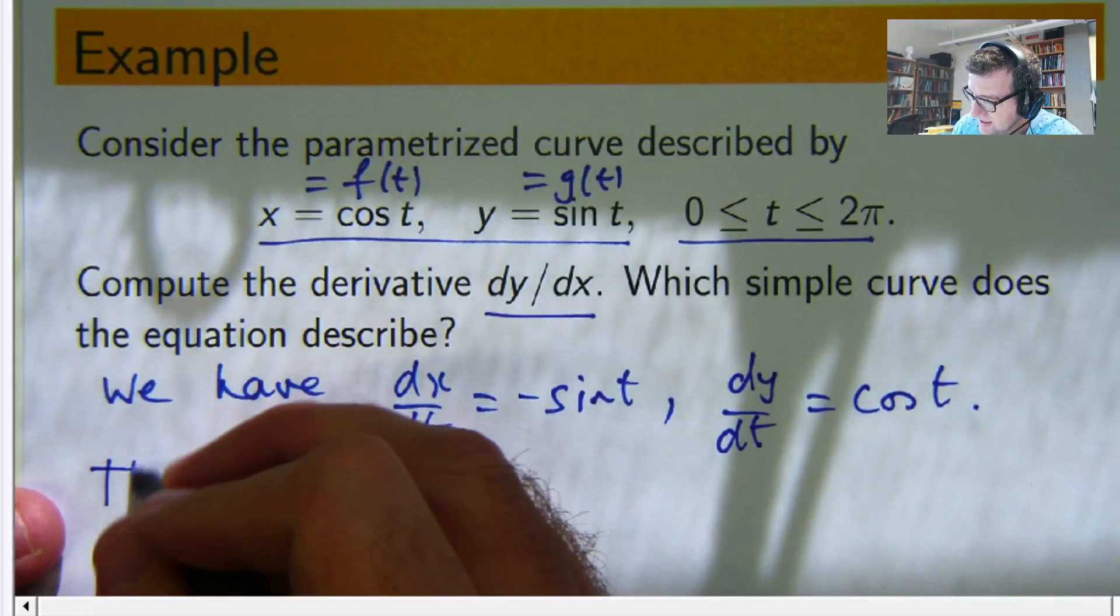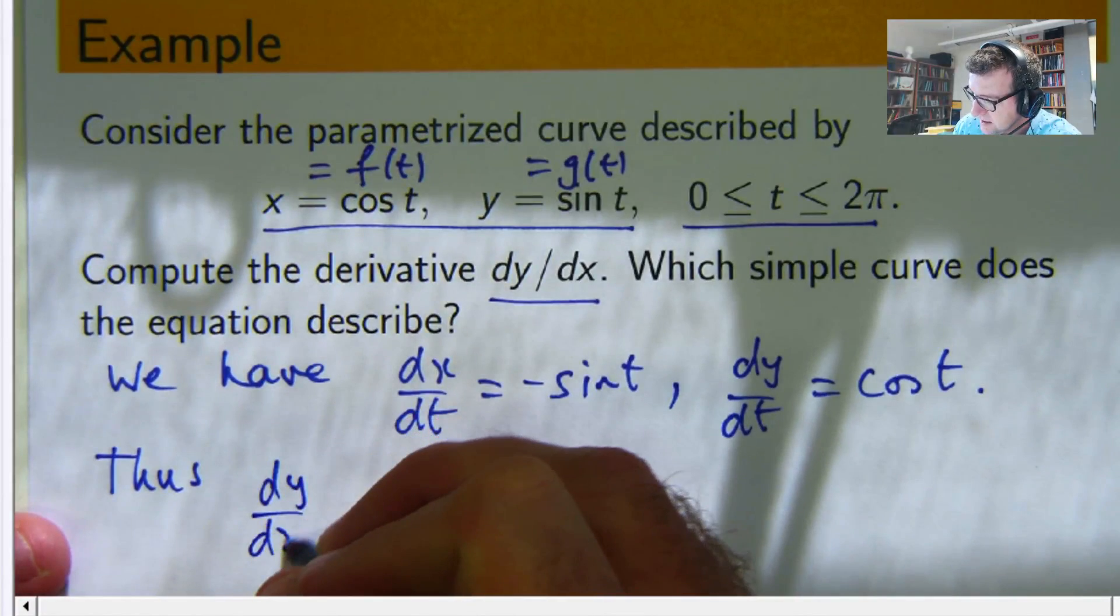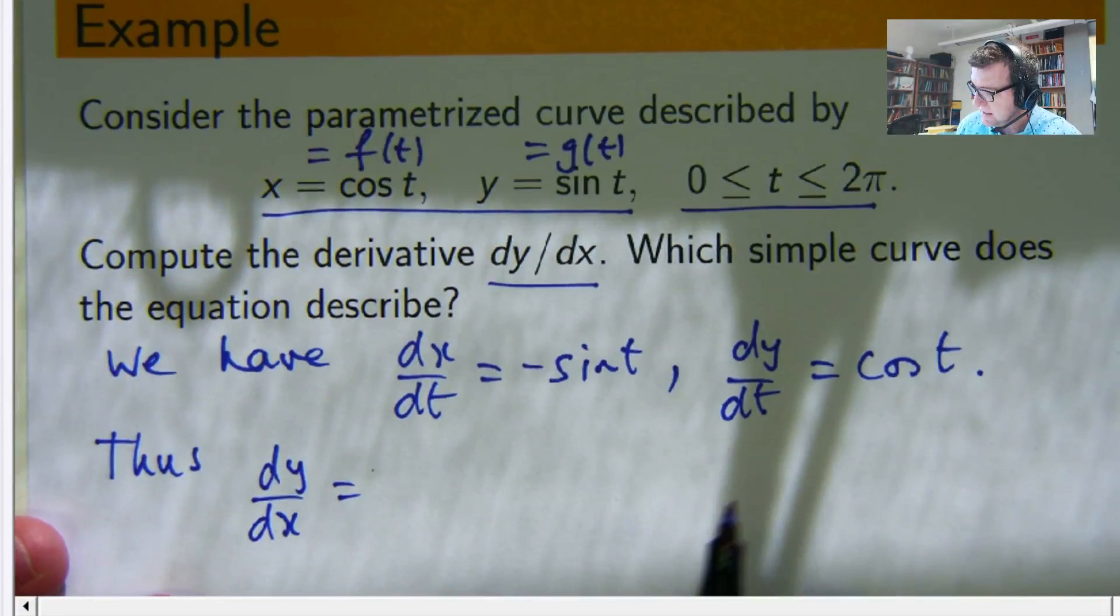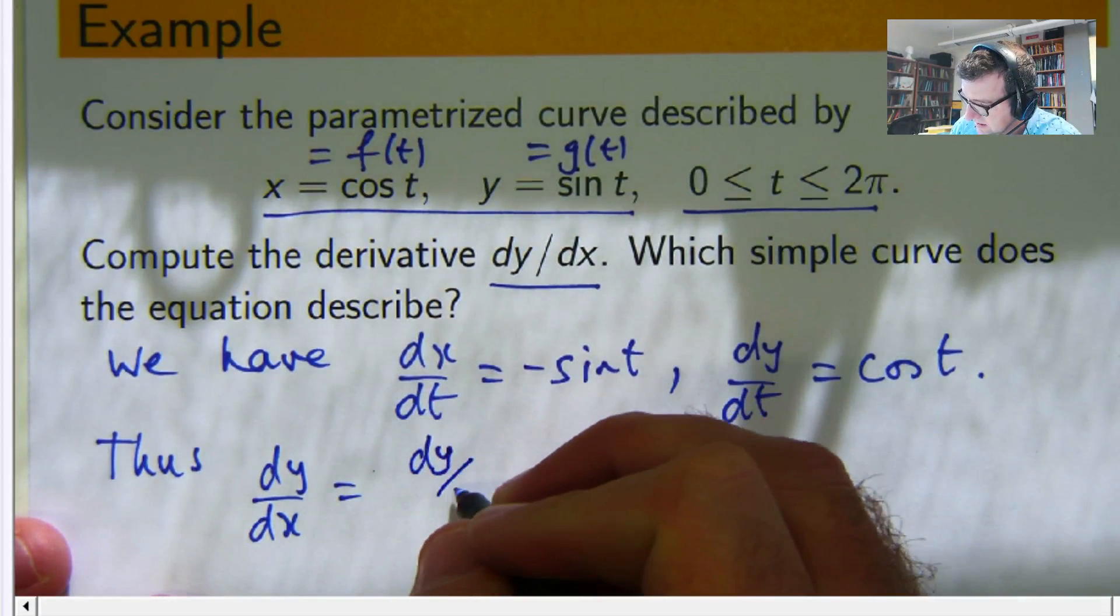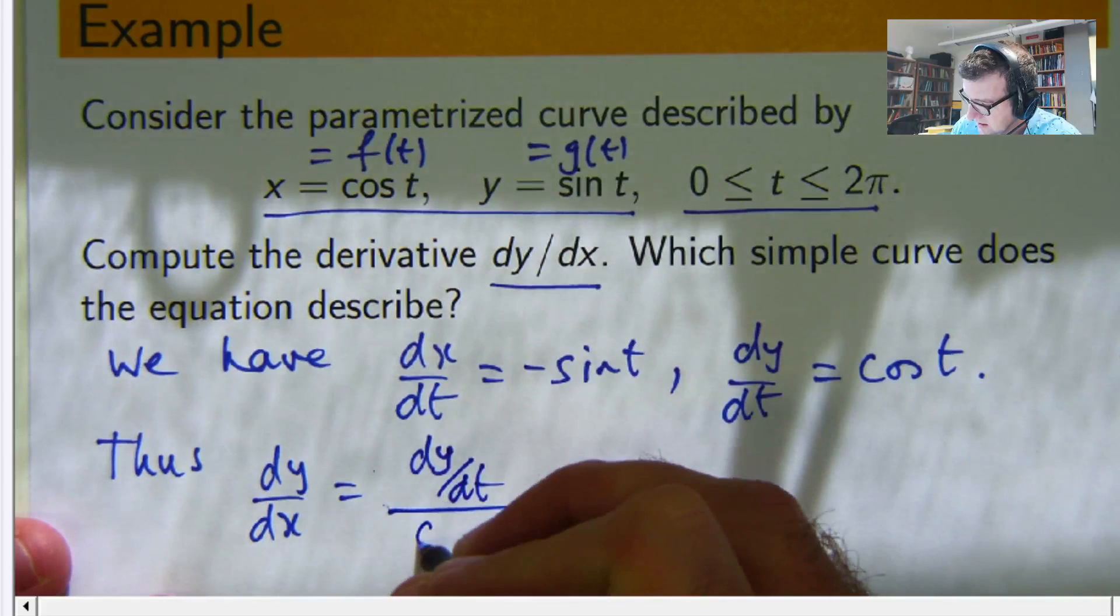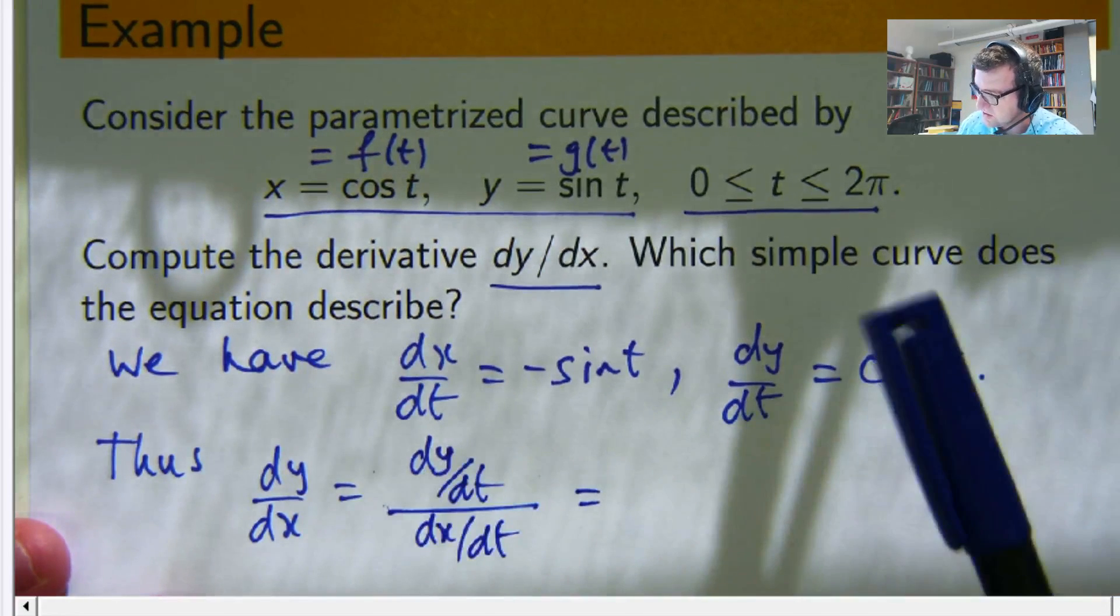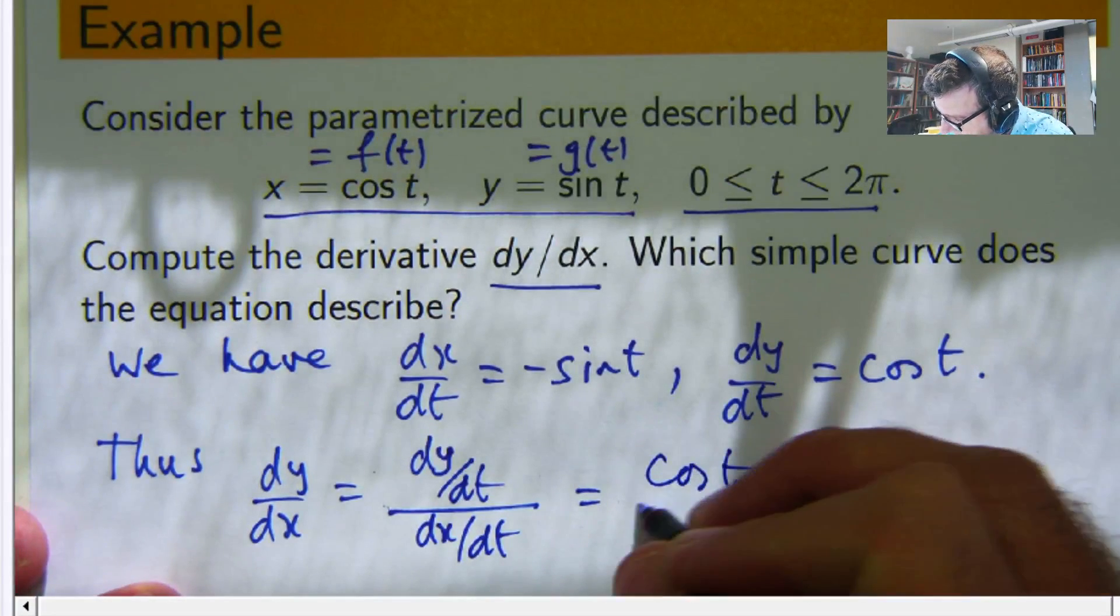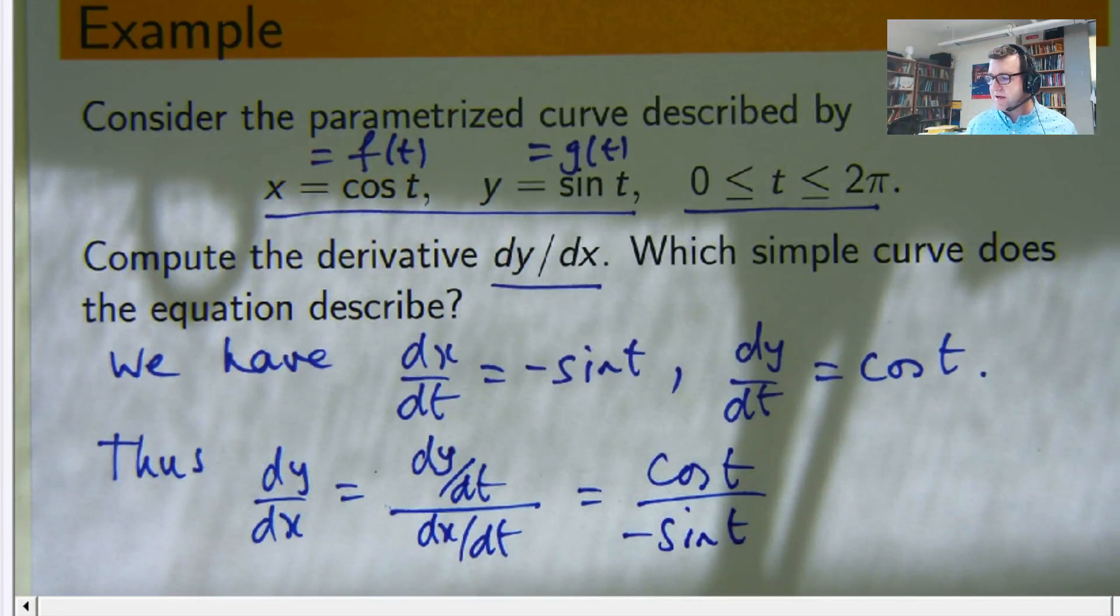Thus, applying our little formula for dy/dx, we get dy/dt over dx/dt, which is cosine t over negative sine of t.